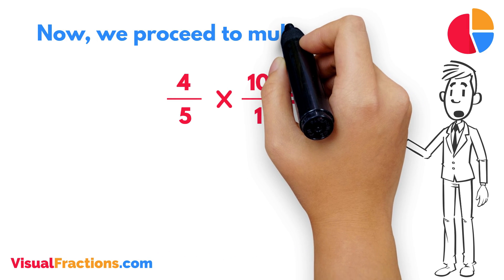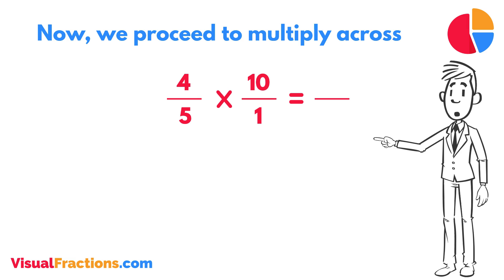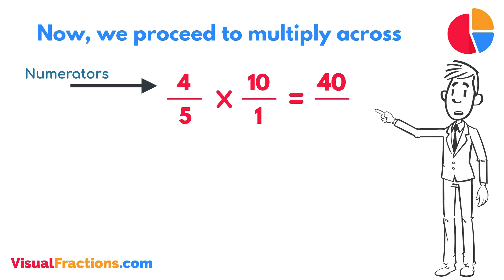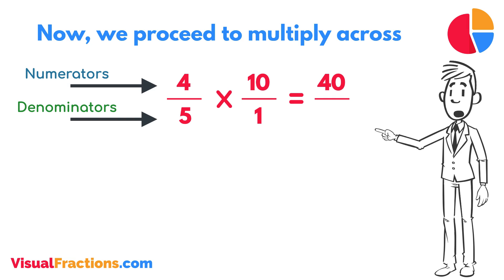Now, we proceed to multiply across. First, multiply the numerators, 4 times 10 equals 40. Next, multiply the denominators, 1 times 5 equals 5.